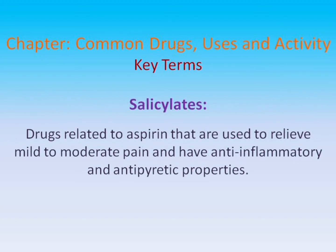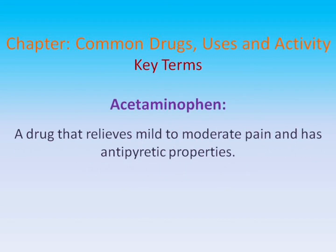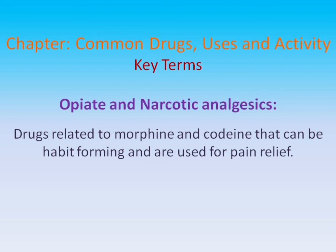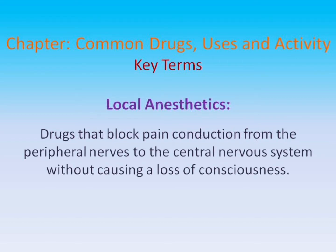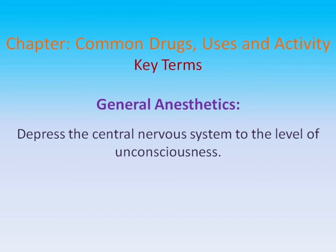Salicylates: Drugs related to aspirin that are used to relieve mild to moderate pain, and have anti-inflammatory and antipyretic properties. Acetaminophen: A drug that relieves mild to moderate pain and has antipyretic properties. Opiate and narcotic analgesics: Drugs related to morphine and codeine that can be habit-forming and are used for pain relief. Anesthetic agents: Cause an absence of sensation or pain. Local anesthetics: Drugs that block pain conduction from the peripheral nerves to the central nervous system, without causing a loss of consciousness. General anesthetics: Depress the central nervous system to the level of unconsciousness.